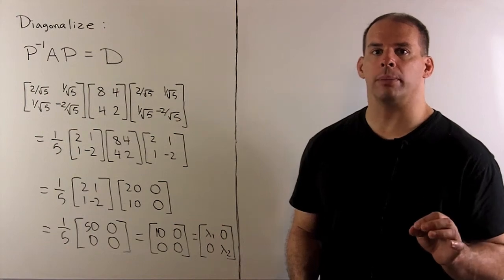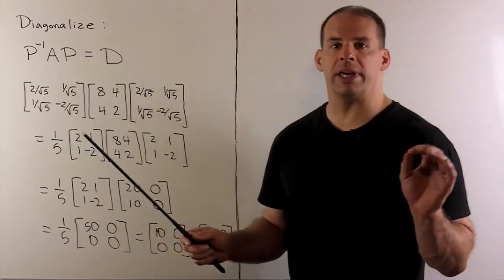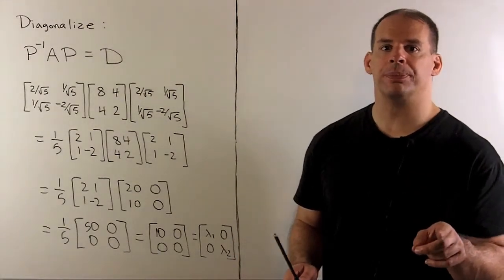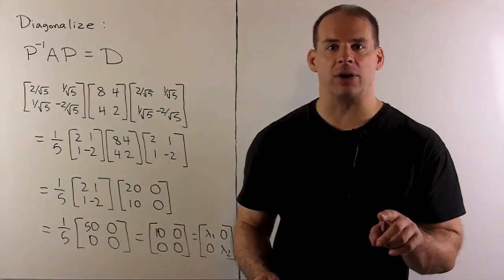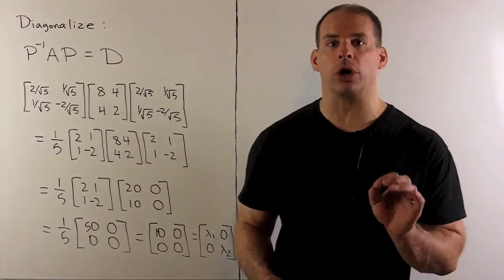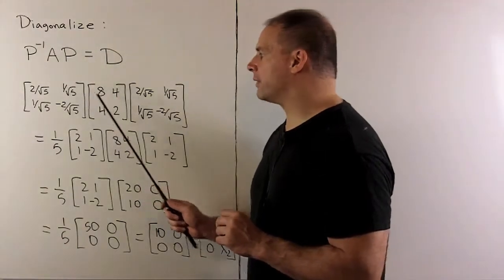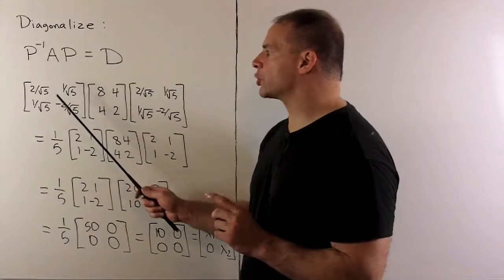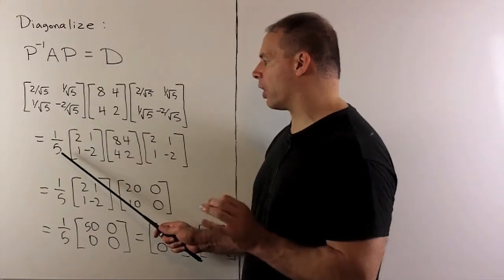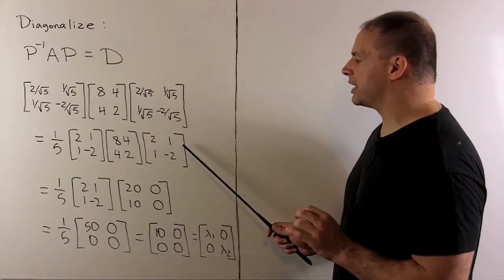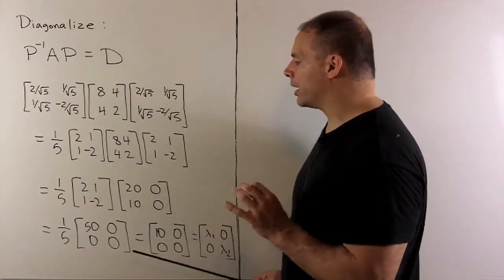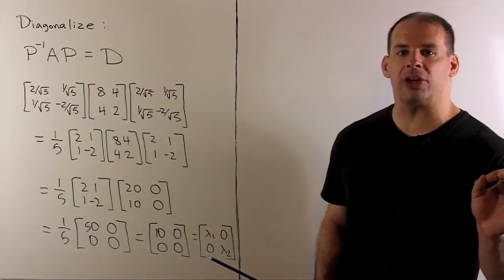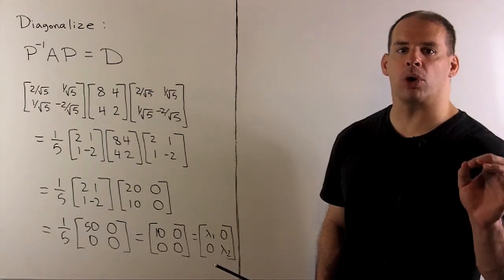To finish, let's put our matrix in diagonal form by computing P inverse AP and showing we get a diagonal matrix. P is the matrix whose columns are the eigenvectors, and D is the diagonal matrix with eigenvalues on the diagonal in the same order. Since P is orthogonal, P inverse equals P transpose, which here also equals P. Pulling one over root 5 out of each matrix gives a factor of one-fifth out front, making the matrices easier to read. Multiplying the two inner matrices gives [20, 0; 10, 0], and taking that product yields [50, 0; 0, 0]. Multiplying by one-fifth gives [10, 0; 0, 0], which is the diagonal matrix with eigenvalues 10 and 0 on the diagonal in the same order as our eigenvectors.